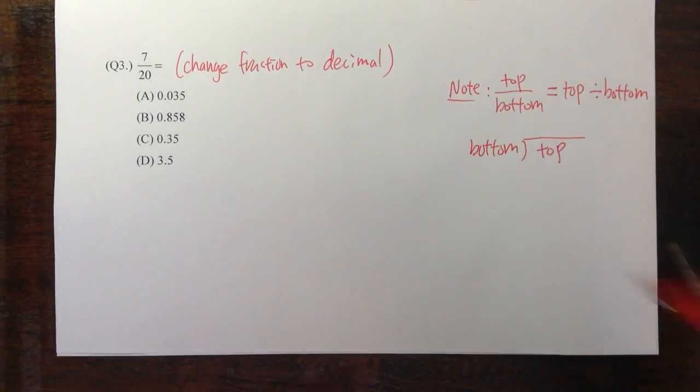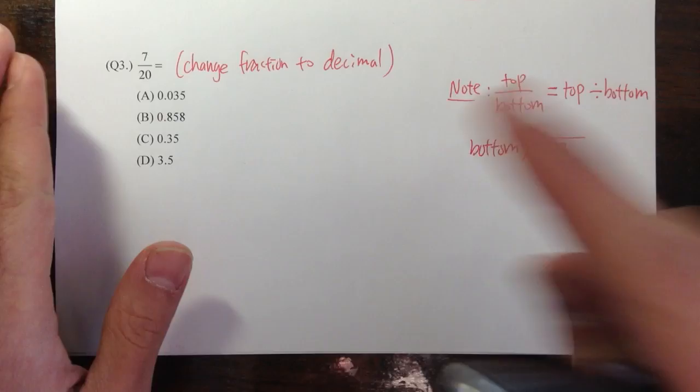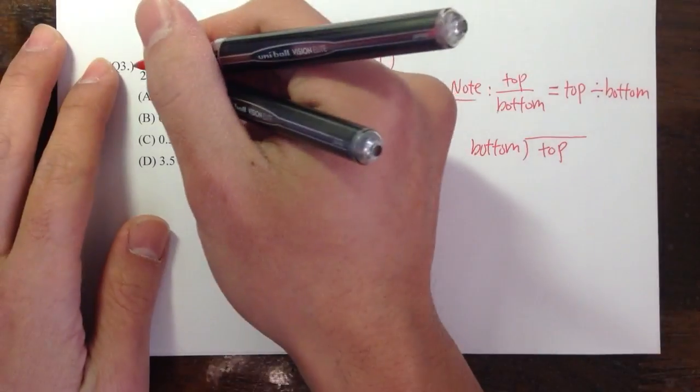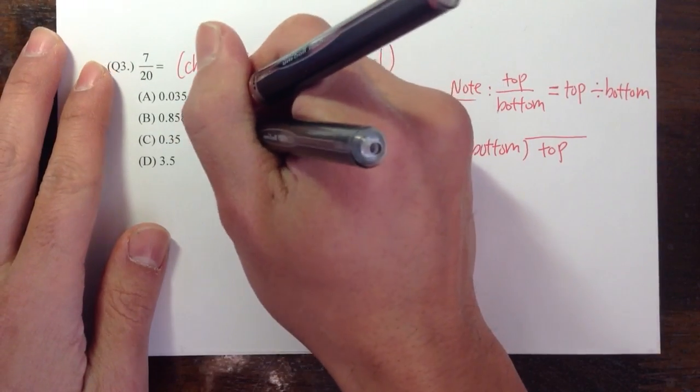So this is pretty much the steps to change fractions to decimals. Let's take a look.